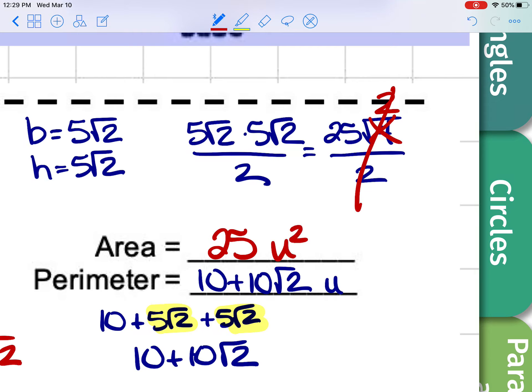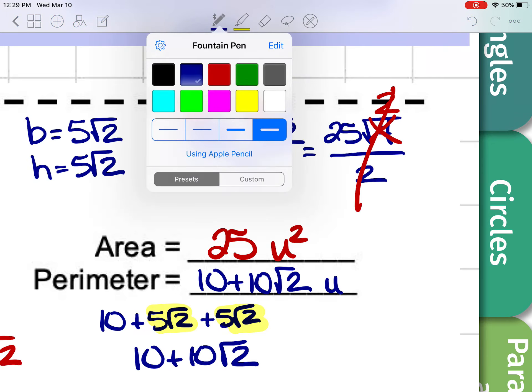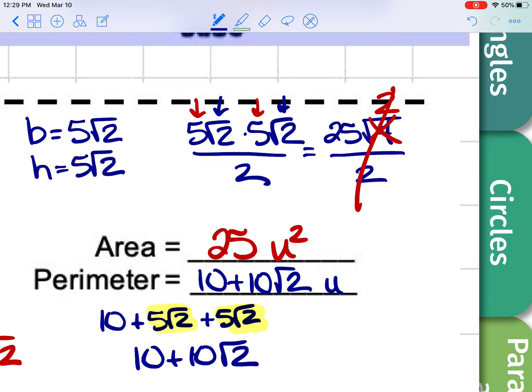So the thing with radicals is outside times outside, inside times inside. So really pay attention to that, and then look and combine your like terms where you can.